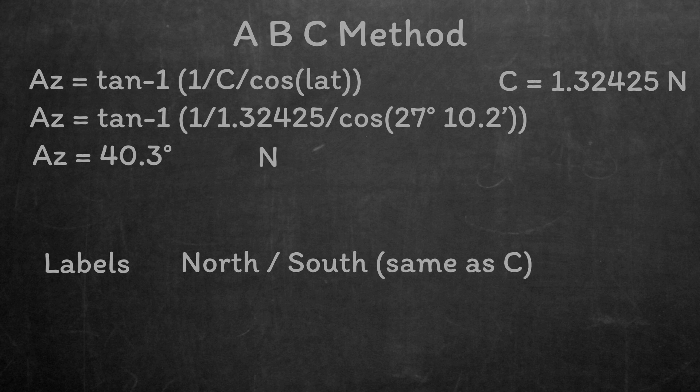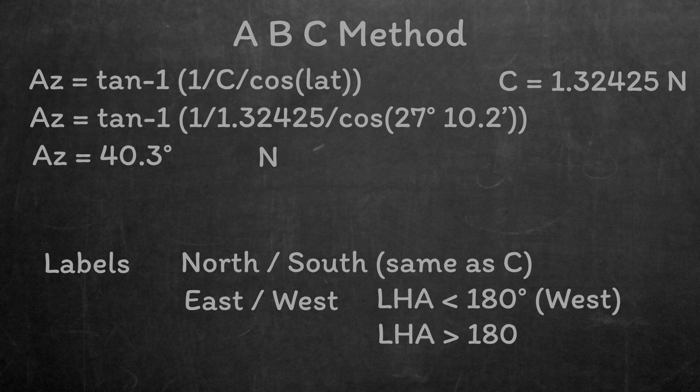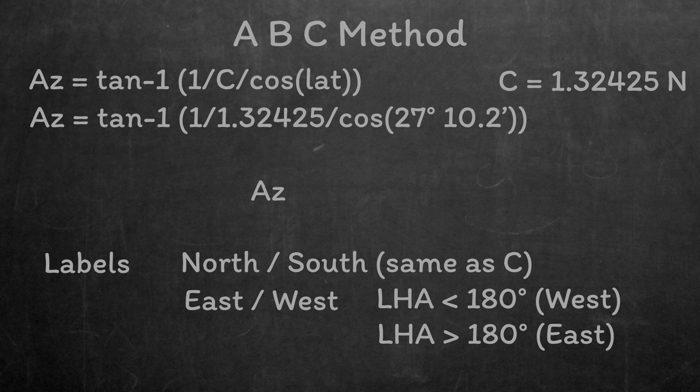East and west depends on the local hour angle. If the local hour angle is less than 180 degrees, the label is going to be west. If it's greater than 180 degrees, the label is east. So in our case, we're going to write azimuth equals north 40.3 degrees east.